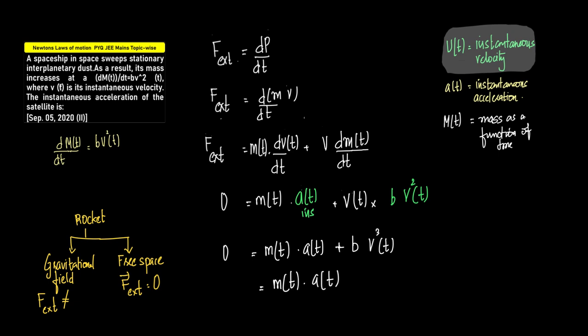Now when it comes to the comparison of rocket, what we need to understand is in the rocket equation we will have two parts. One, when the rocket is within the gravitational field, and one when the rocket has crossed the gravitational field and it has reached the space.